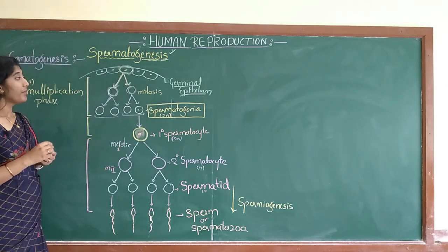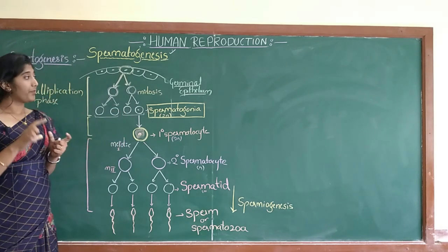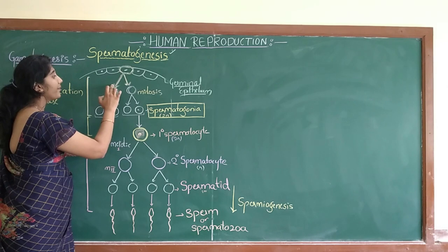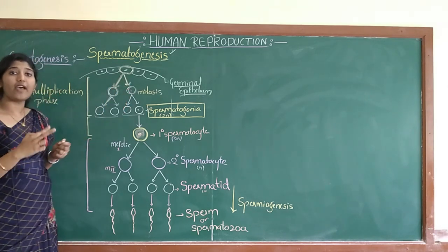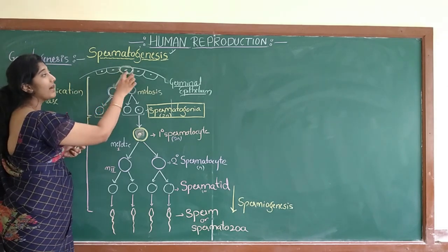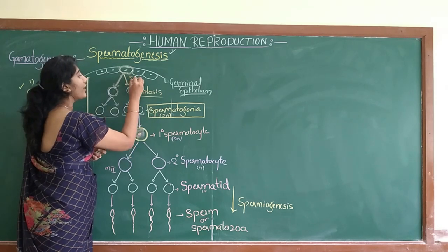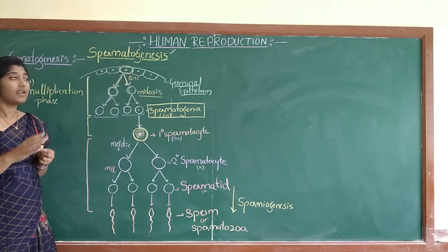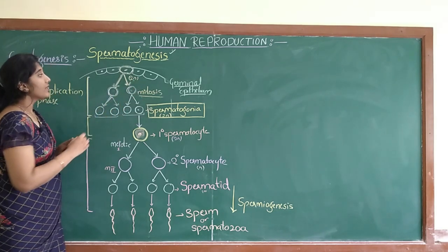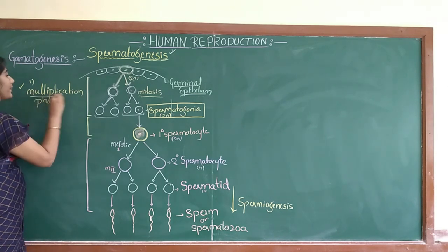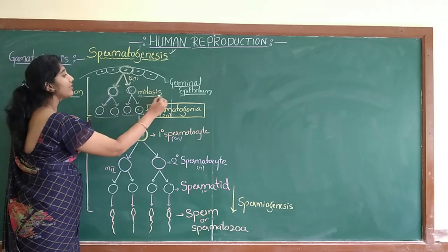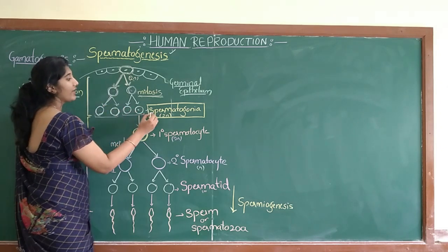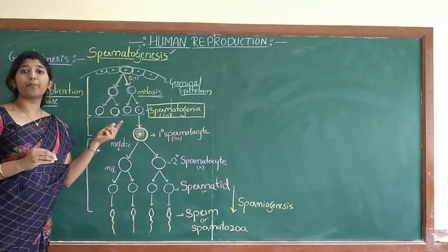Spermatogonia are the cells produced by the division of the germ cell. The division is mitosis. In mitosis, the mother cell splits into two daughter cells, and both daughter cells have the same chromosome number as the mother cell. So if the mother cell is diploid, after mitosis the daughter cells are also diploid. In the multiplication phase, after many mitotic divisions, the germ cell gives rise to a number of cells called spermatogonia, and they are diploid.